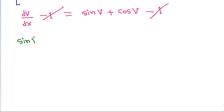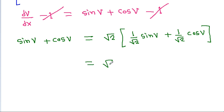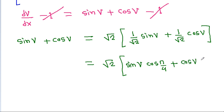Now sin(v) plus cos(v) can be written as root 2 times (1/√2 · sin v minus 1/√2 · cos v), and since 1/√2 is cos(π/4) and 1/√2 is sin(π/4), this becomes root 2 times sin(v) · cos(π/4) plus cos(v) · sin(π/4).